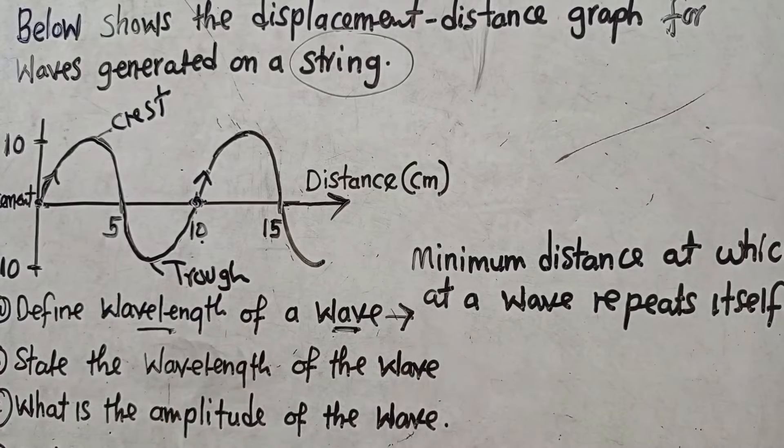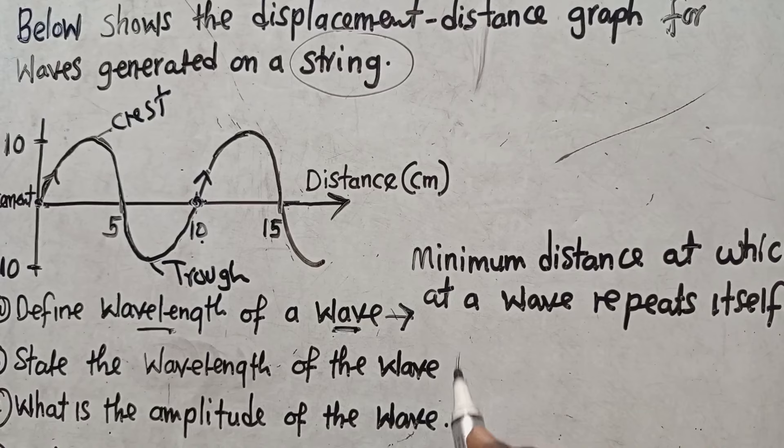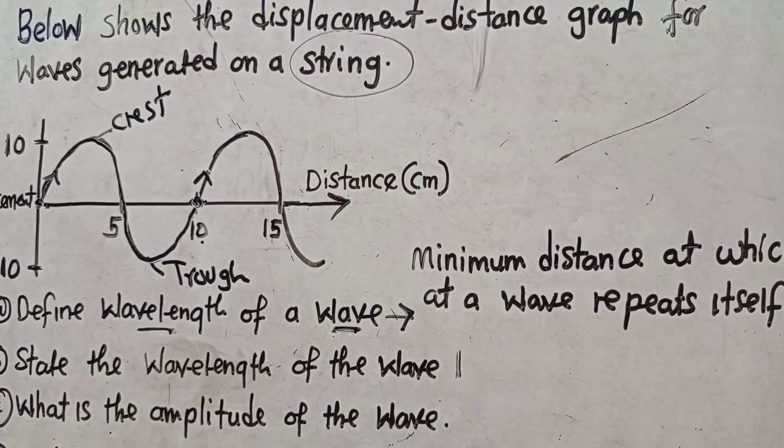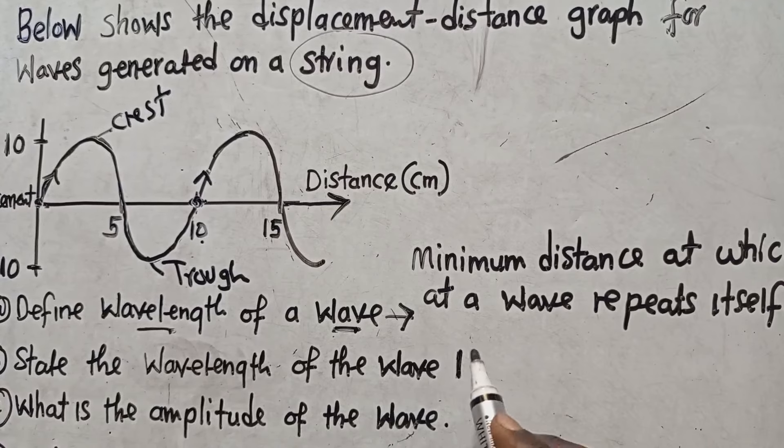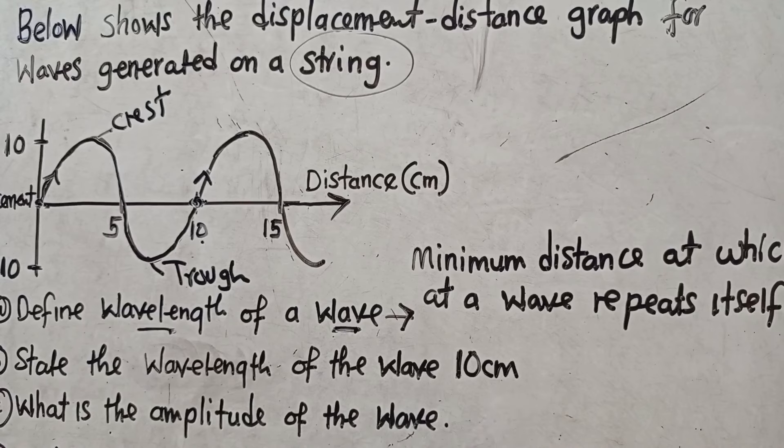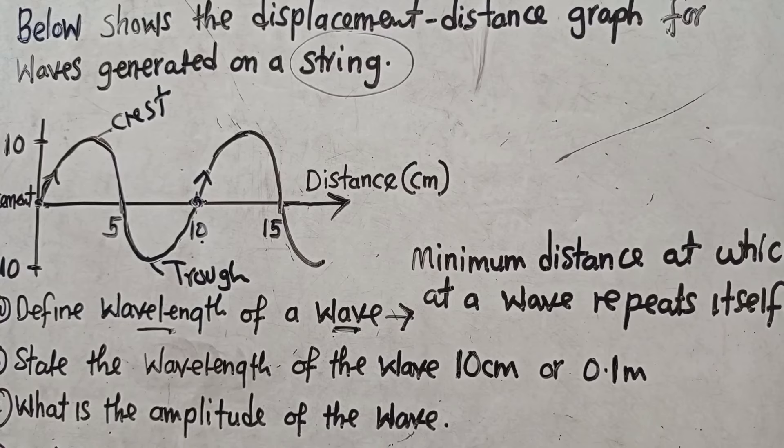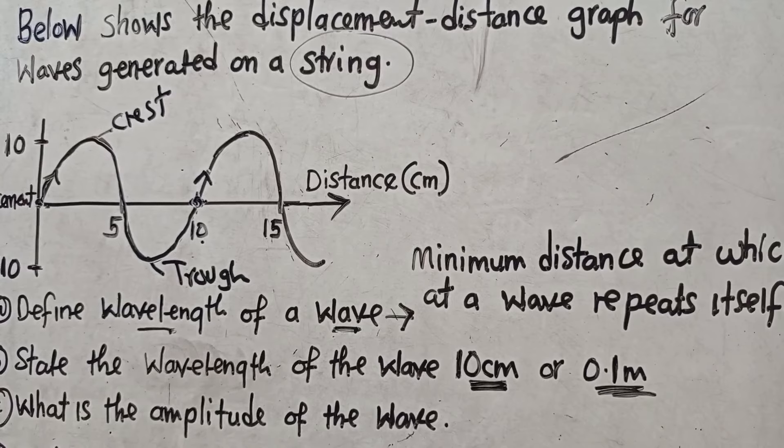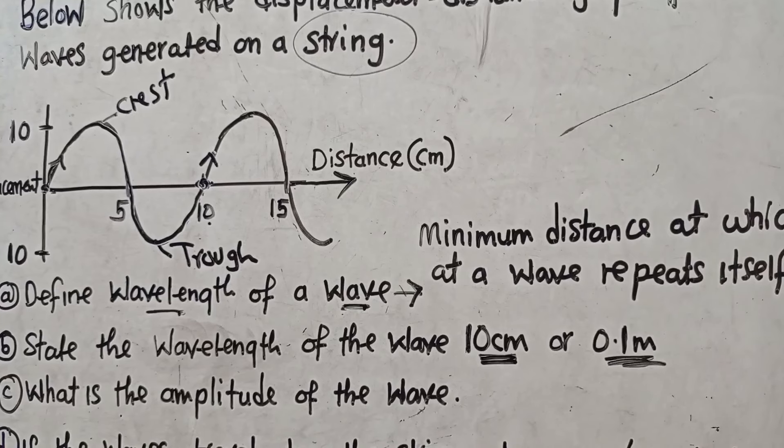It is what? 10 and it is in centimeters. So you can put 10 centimeters there. If you want to put it in meters you divide it by 100, that is 0.1. So 0.1 meters, it is just the same. So this is the answer. This one or that one, it is just one and the same. The next question, it is saying what is the amplitude of the wave?